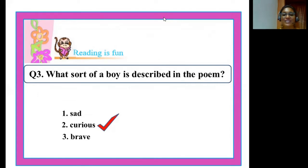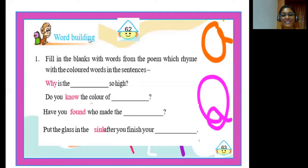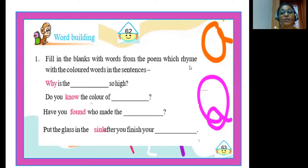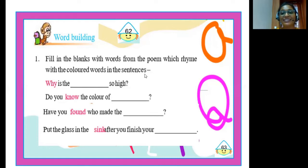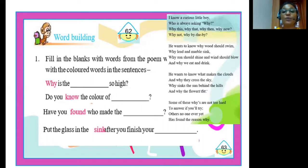Let's now try our next textual exercise: word building. The question is to fill in the blanks with words from the poem which rhyme with the colored words in the sentences. Rhyming words are words that end with a similar sound — for example, 'say' and 'may.' Let's revise by finding rhyming words from the poem 'Why,' which is displayed on the screen.